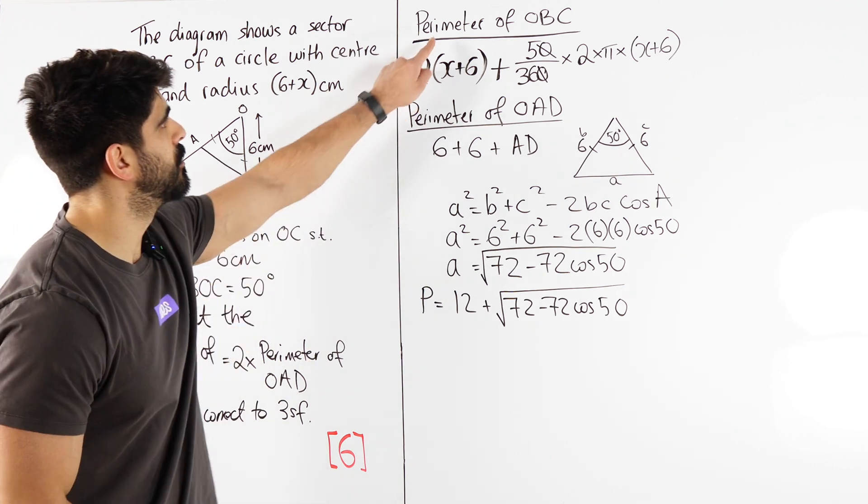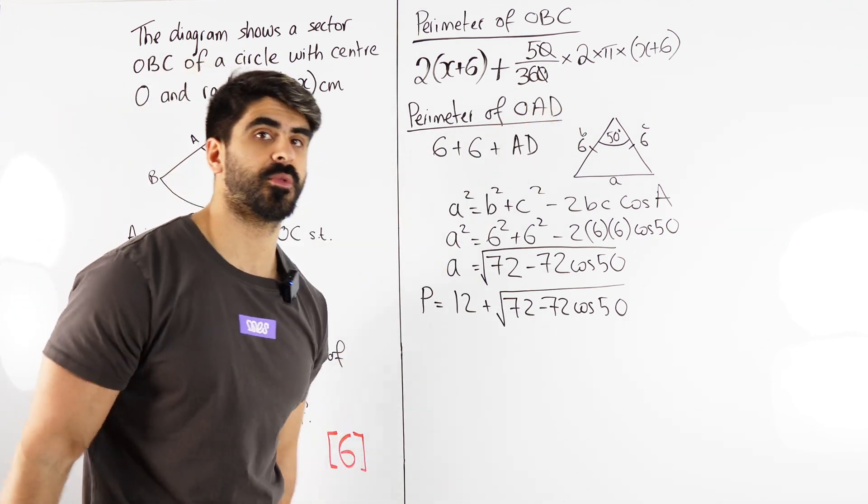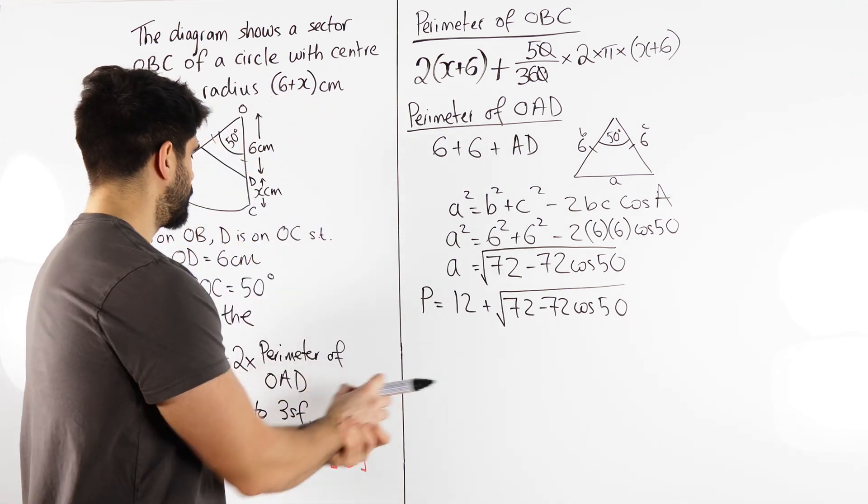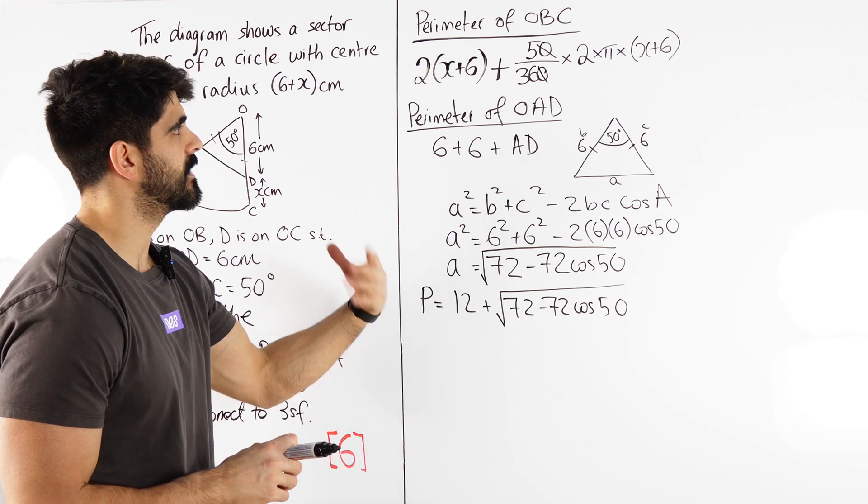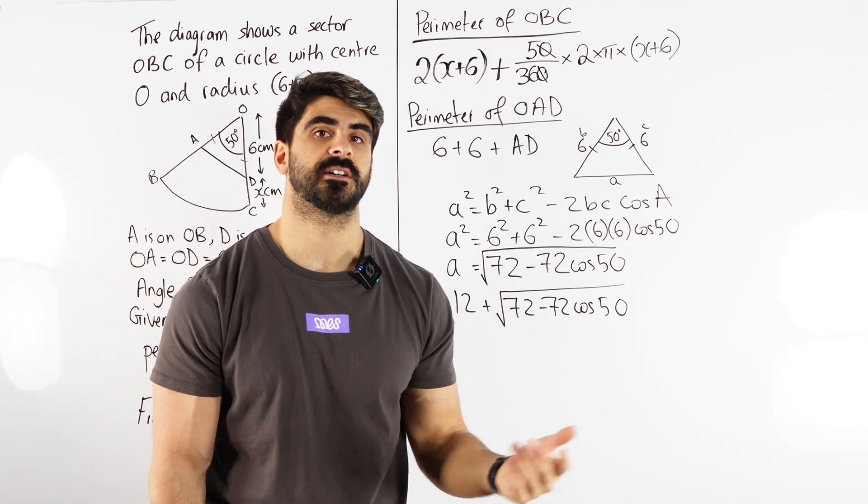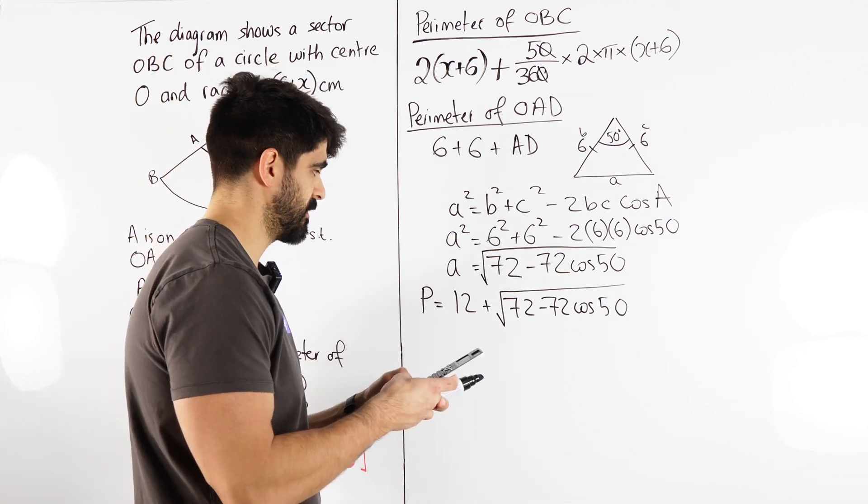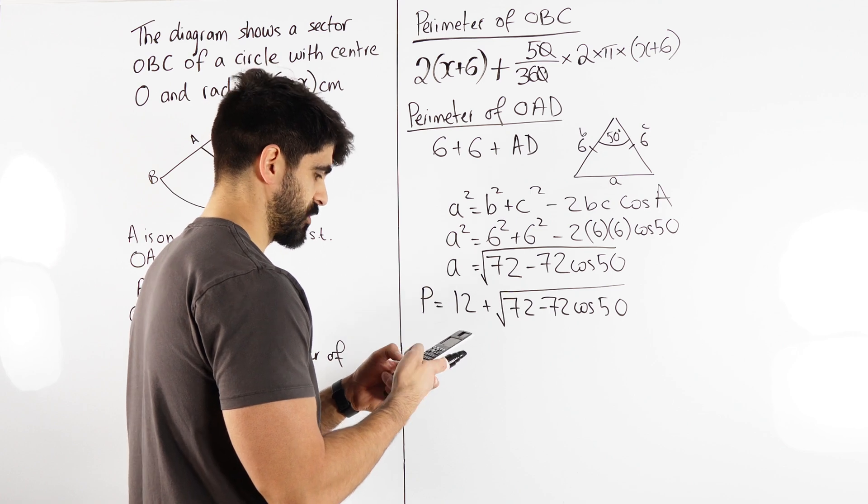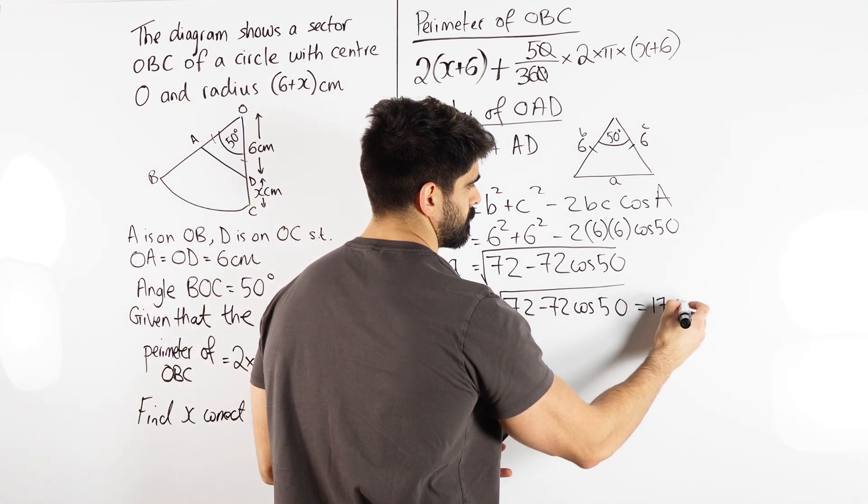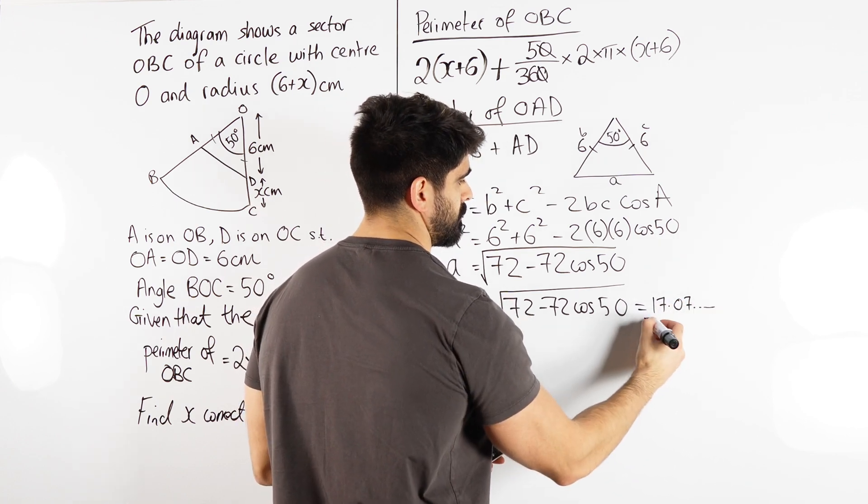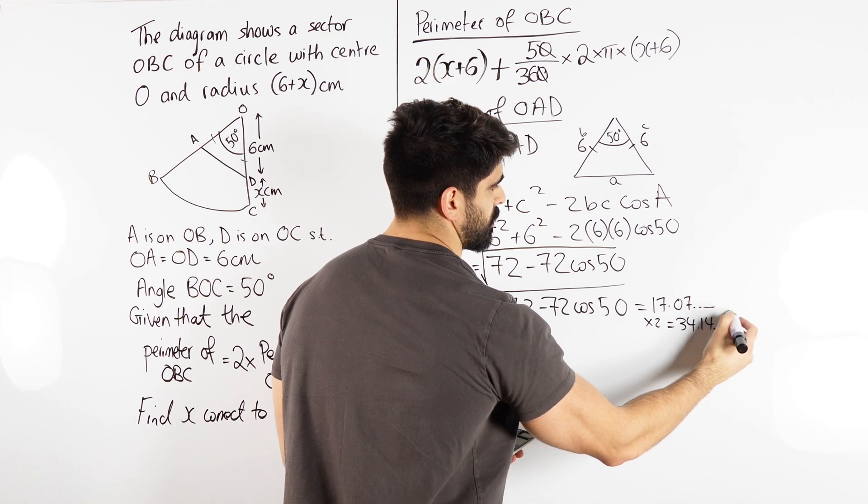And now what are they saying? They're saying this equals two lots of this. So if I double this, I get this horrible thing and we need to rearrange for x. That does not look very nice, but we have to do it, mate. There's different ways we can do this. You could double this right with this and then try and solve. Or we could type this in the calculator and store it. I've shown you guys many times how to store values. So I'm going to do that here. So I'm going to type this in now, 12 plus. I need to make sure I'm in degrees mode. 12 plus root 72 minus 72 cos 50 gives me 17.07. Now I'm going to times that by 2. So when I times that by 2, I get 34.14. And I'm going to store that as the letter A.